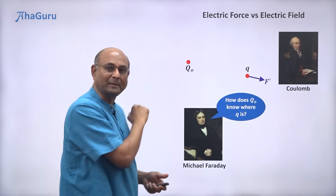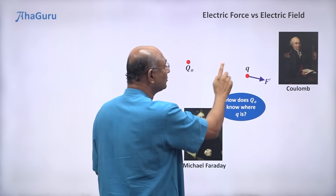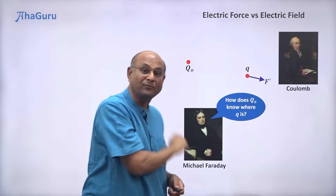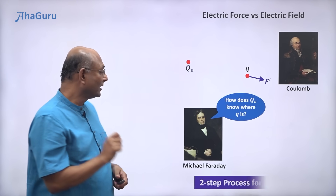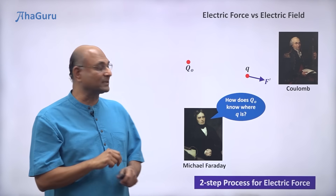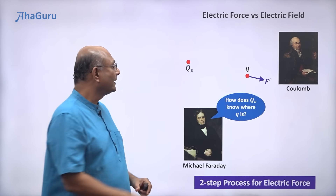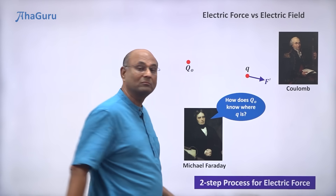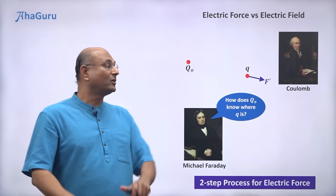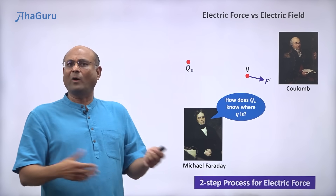No. Clearly, that's absurd. So Faraday's point was: Q naught does not know where Q is. Then how can it change the force? So something is wrong. He proposed a two-step process for electric forces. He said Q naught does not know anything about Q. Then how does it exert a force? Because Q naught does something to space.